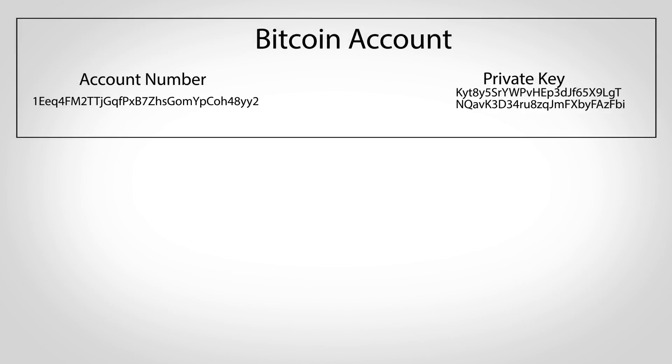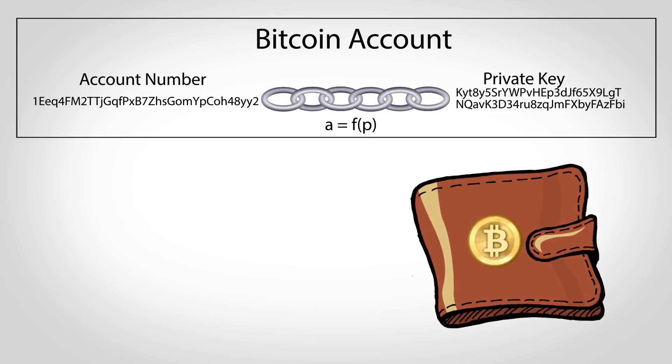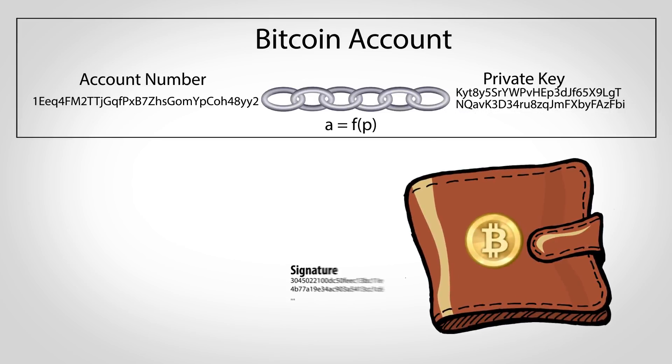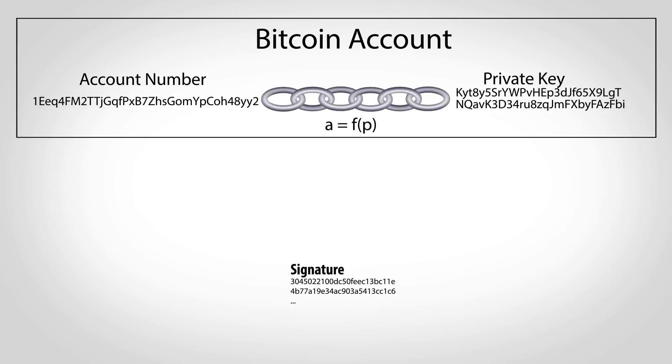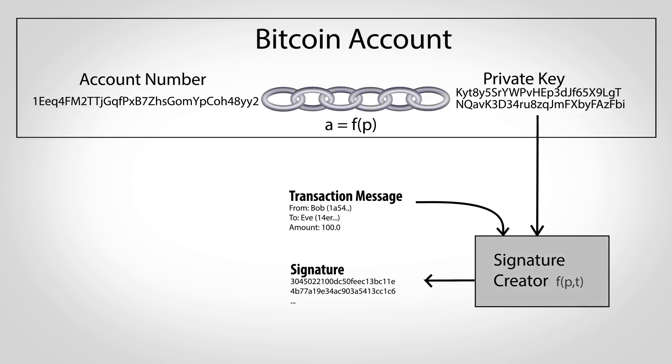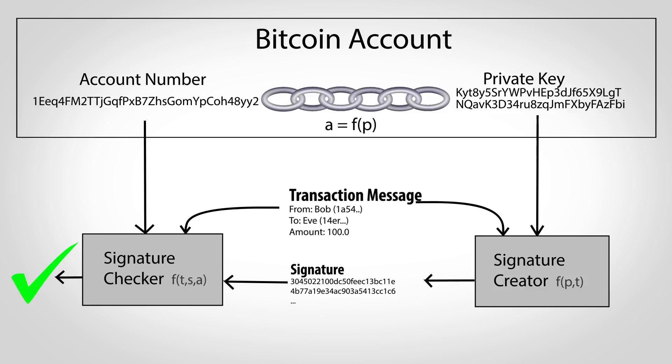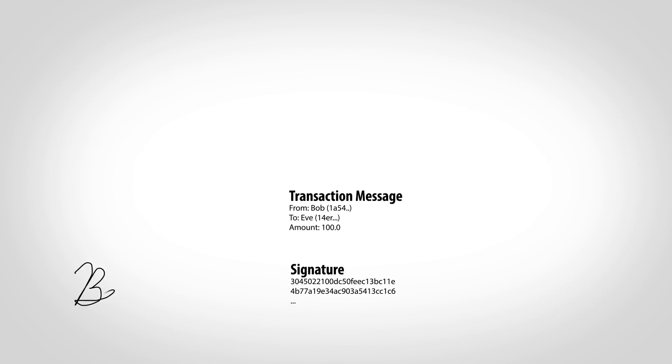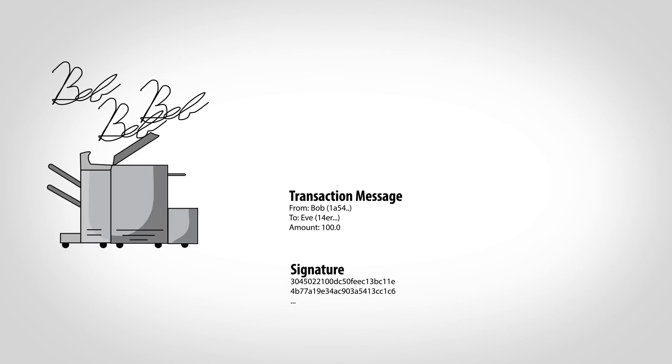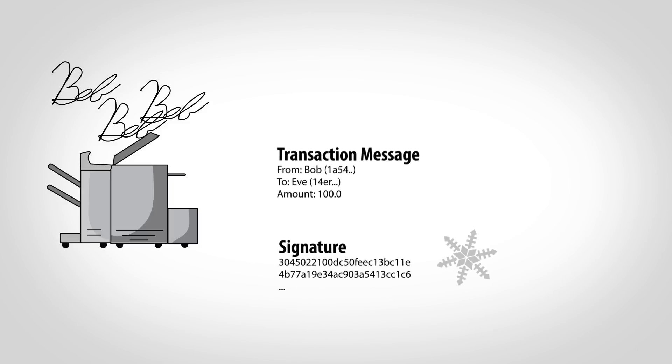When a new account number is created, it comes along with a private key mathematically linked to that account number. If you've heard of a Bitcoin wallet, these keys are what it holds, and are what allow you to create signatures. To create a signature, a private key and the text from a transaction are fed into a special cryptographic function. Another function allows other people to check the signature, making sure it was created by the account owner and that it applies to that specific transaction. Unlike the handwritten version, these signatures can't be copied and reused in the future, as they're unique to each transaction.